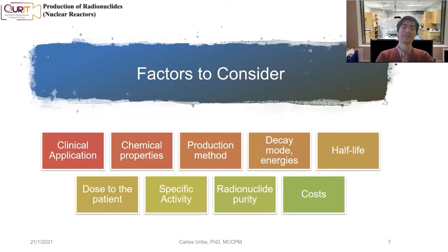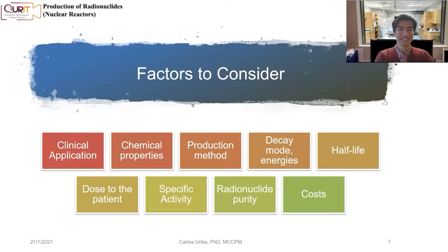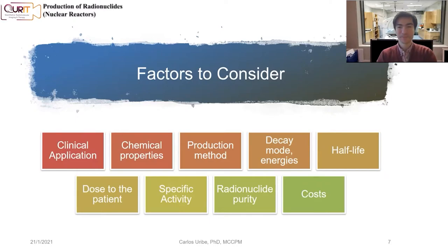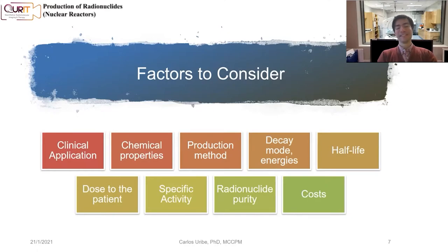There are several factors to consider when producing radioisotopes. One is the clinical application: do we want to use a radioisotope to get images, or to treat tumors? We also have to look at the chemical properties of that radioisotope. We develop molecules to target particular processes in the body, and to image or treat, we need to combine those molecules with a radioisotope. If we cannot attach the radioisotope to those molecules, we won't get very far.